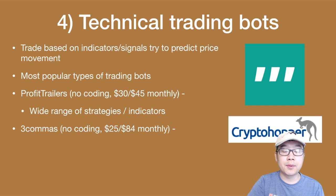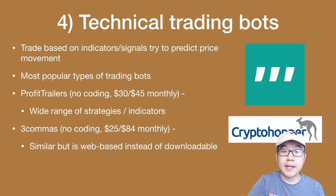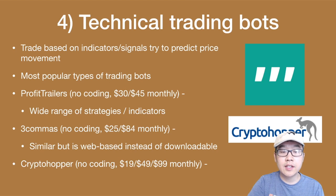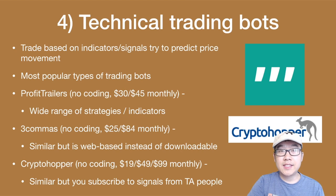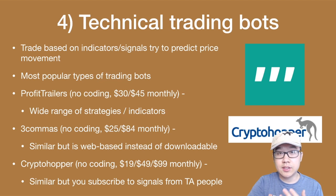3Commas is also a very popular technical trading bot — no coding required, ranging from $25 to $84 a month depending on the tier you choose, and is web-based rather than a downloadable version. Cryptohopper is another option: also no coding, three tiers — you can check the prices on screen. It's similar to the others, but in this one you subscribe to signals from technical analysts and then it runs those trades for you if you decide to do so.